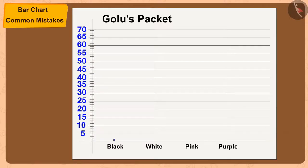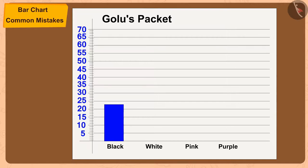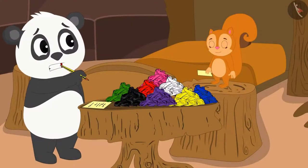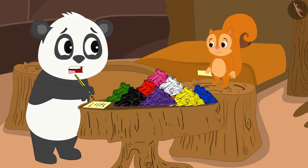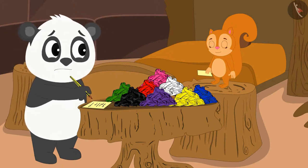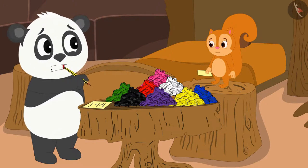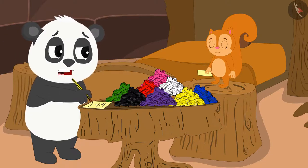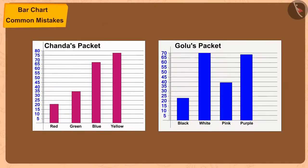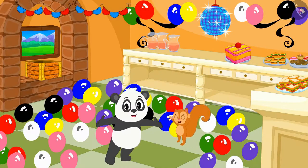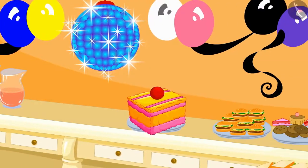Golu quickly showed the number of black balloons, 23, by drawing a rectangle of height 3 small parts above the 20 mark. Golu says: 'I understand my mistake — from now on, before making a bar chart, I will decide the scale first and only then start making it.' Chanda and Golu completed their bar charts and decorated Bhoala's house with beautiful balloon patterns for his birthday.